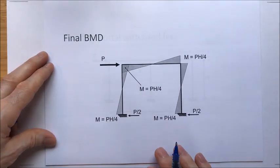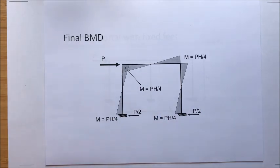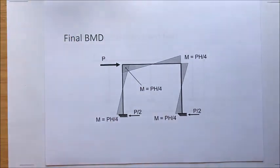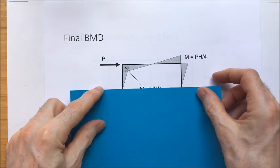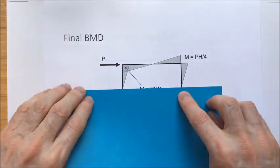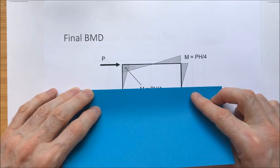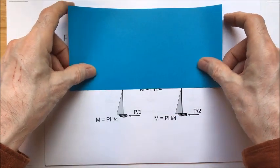That's it — it's as simple as that. With a frame with fixed feet, it's quite convenient to split it into an upper part and a lower part. Typically at points of contraflexure, we look at the upper part by creating pins and splitting the frame into a sub-frame, and then we look at the lower part.